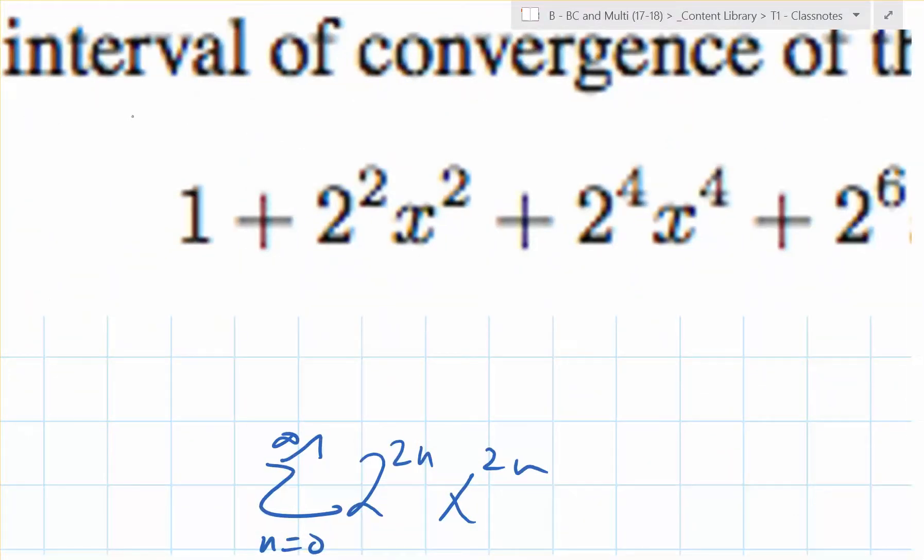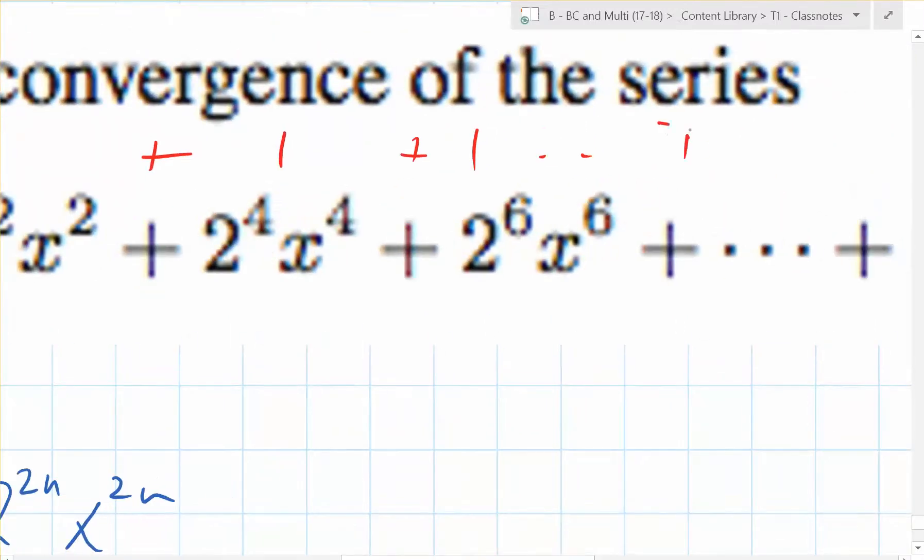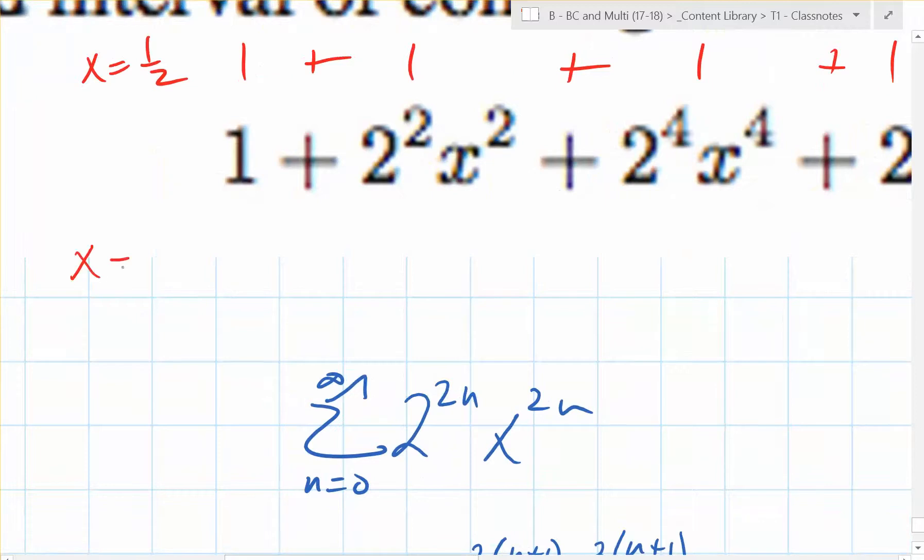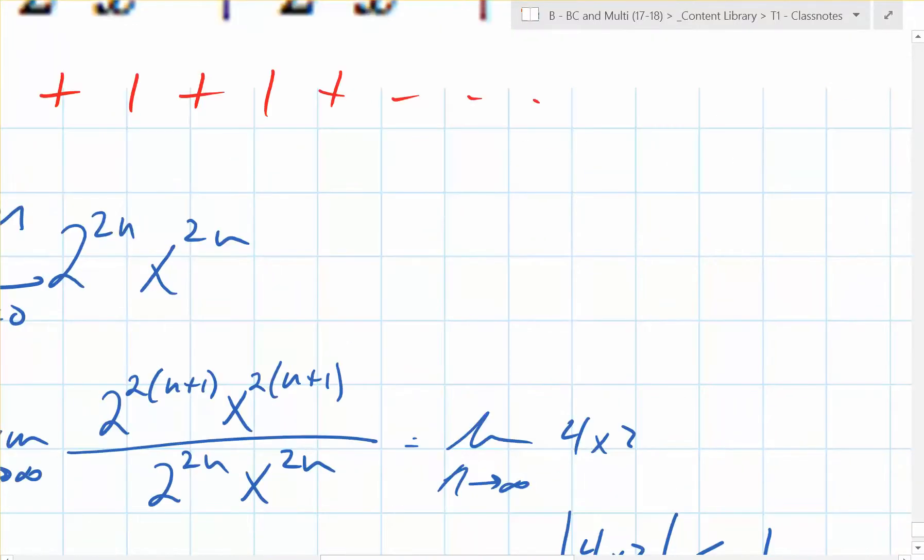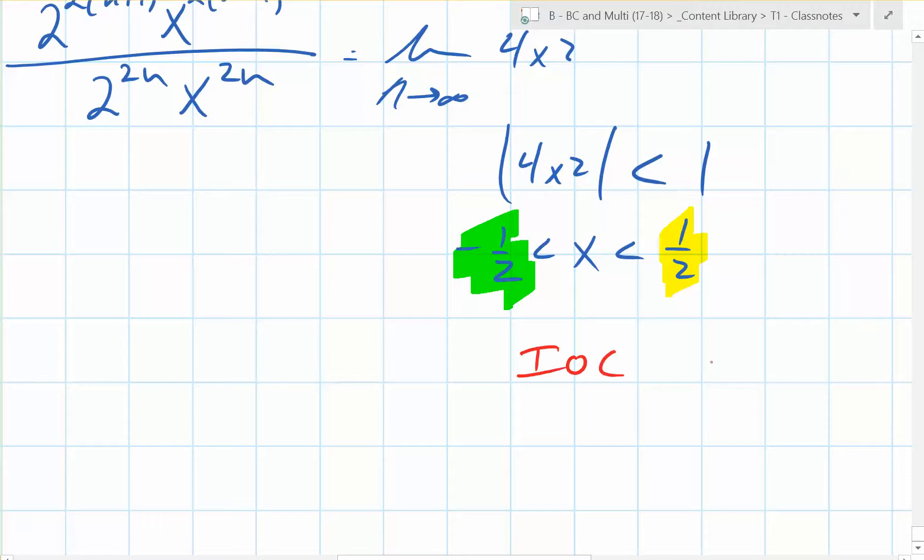What happens when you plug in 1 half? When x equals 1 half, they all come out positive. Literally list out the terms. What do you get? 1 plus 1 plus 1. So that definitely diverges. And if you plug in x equals negative 1 half, it doesn't change anything because you're having these even powers. You must test the endpoints. So the interval of convergence will be negative 1 half to positive 1 half.